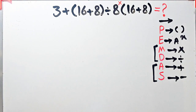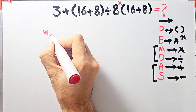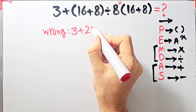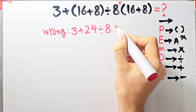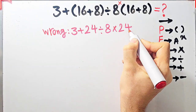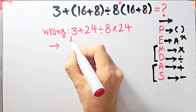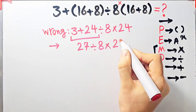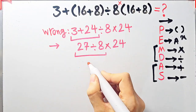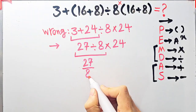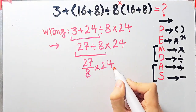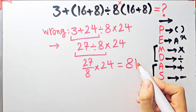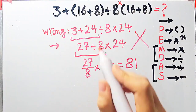In the wrong way of solving this question, some people start from the left and don't pay attention to the priority of the mathematical operations. They compute 3 plus 16 plus 8, which equals 24, divided by 8, then times 16 plus 8, which equals 24. Then 3 plus 24 equals 27, divided by 8, then times 24. 27 over 8 times 24 equals 81. But this answer is definitely wrong.